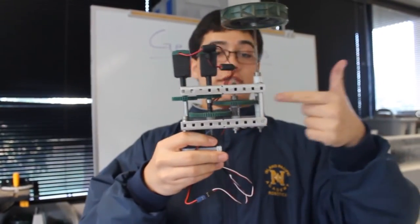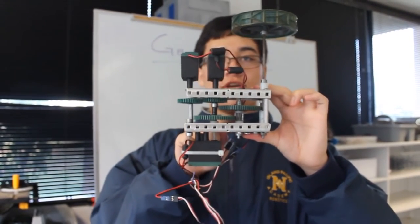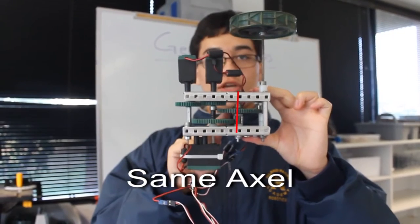This is the first gear ratio, this is the second gear ratio. And the driven gear of the first gear ratio is on the same axle as the driving gear on the second gear ratio.